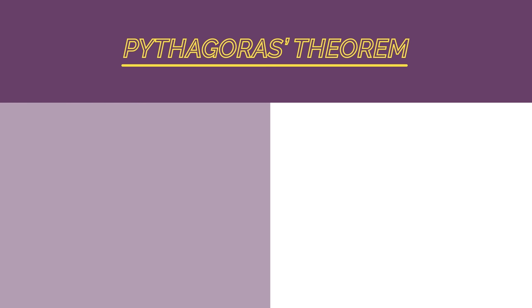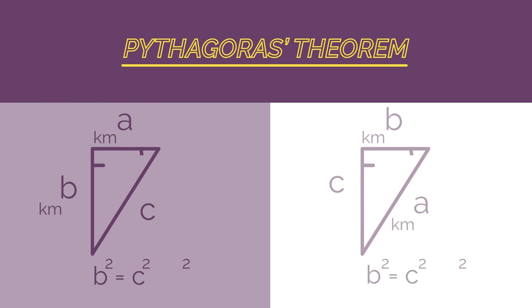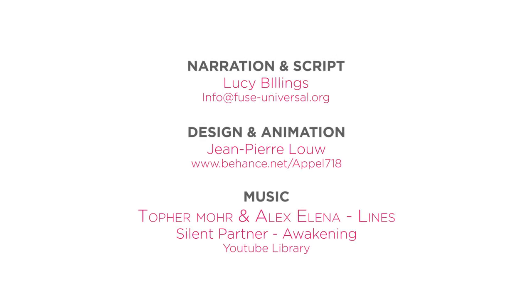So all you need to know about Pythagoras' theorem is that it is only for right-angled triangles, the squares of the smaller sides add up to equal the square of the bigger side. And if you know the length of the bigger side, you square it and take away the square of the smaller side.